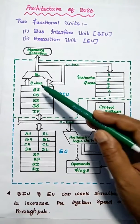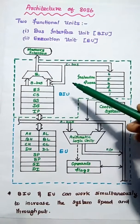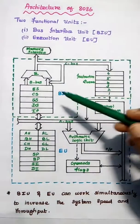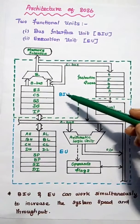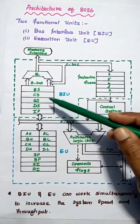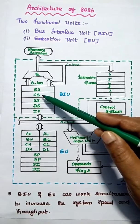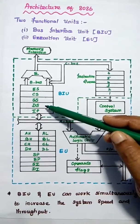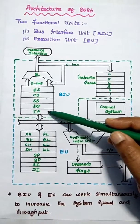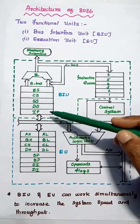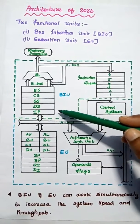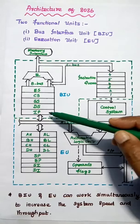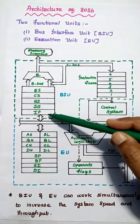The bus represents the connection lines which are mainly used to connect the internal components of this microprocessor. In 8086, there are four segment registers: extra segment, code segment, stack segment, and data segment. The instruction pointer is a 16-bit register which is used to point to the next instruction to be executed, which is why it is called the instruction pointer.